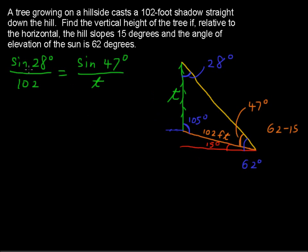Now multiply by t, and multiply by 102, and divide by sine of 28 degrees, and you get t equals 102 multiplied by sine of 47 degrees. And if you're typing that into your calculator, remember to close the parentheses before you then divide by the sine of 28 degrees.